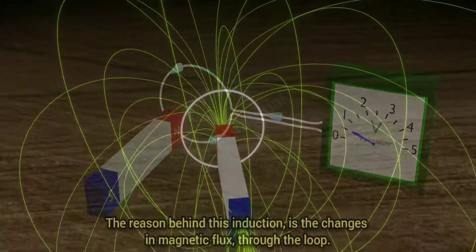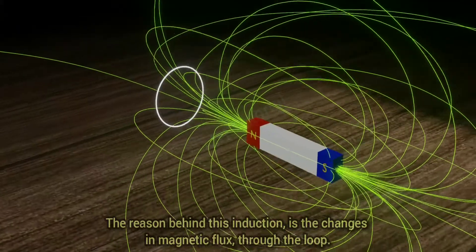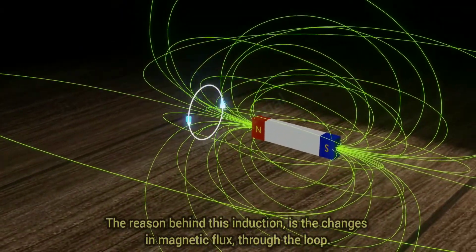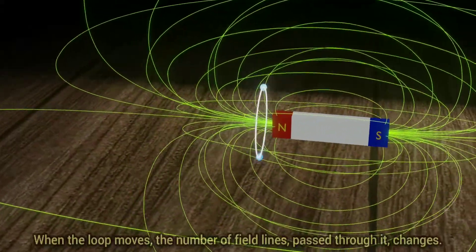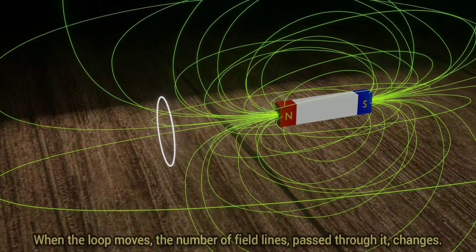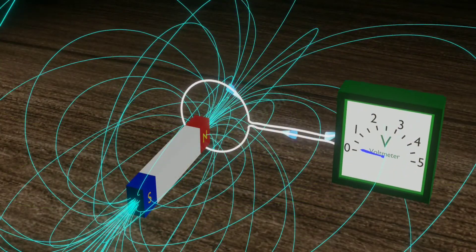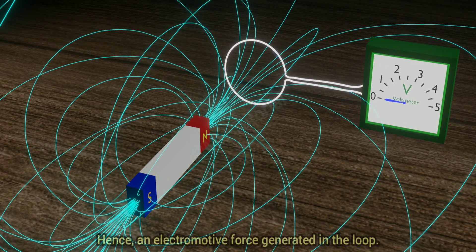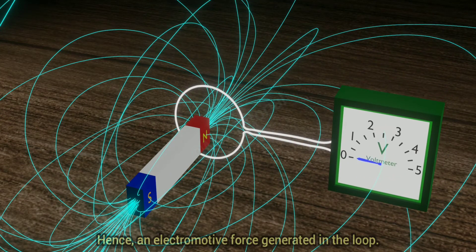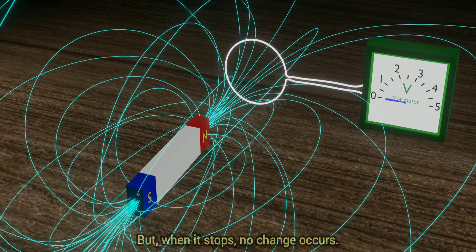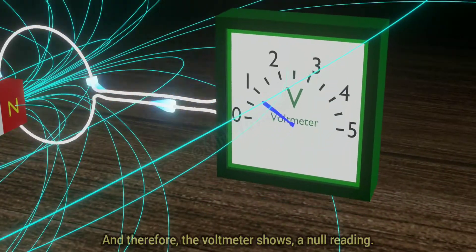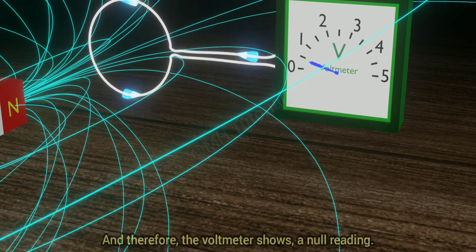The reason behind this induction is the changes in magnetic flux through the loop. When the loop moves, the number of field lines passed through it changes. Hence, an electromotive force is generated in the loop. But when it stops, no change occurs and therefore the voltmeter shows a null reading.